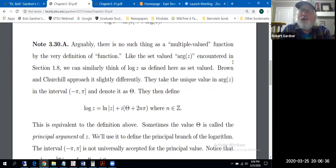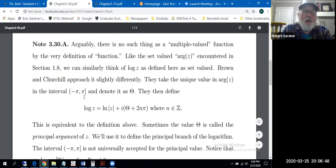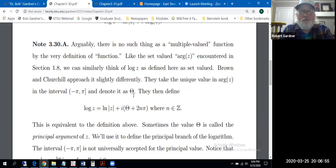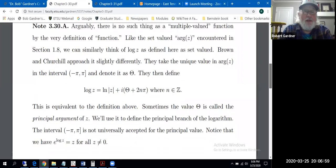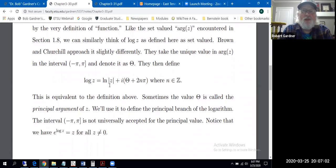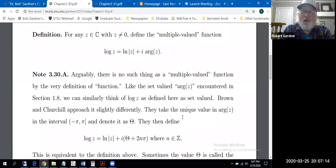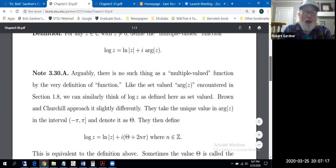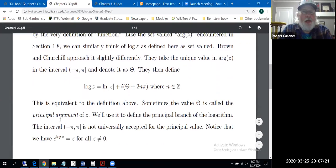Okay, so what we're going to do is take a unique value of arg z that lies in the interval negative π to π, including π, excluding negative π, and denoted by capital theta. Then, this is how Brown and Churchill define this. Define log z to be the natural log of the modulus of z plus i times that principal argument plus 2nπ, where n is any integer. This is equivalent to what was given previously. This is just the notation explicitly that Brown and Churchill used. Theta, capital theta here is the principal argument of z, as mentioned.